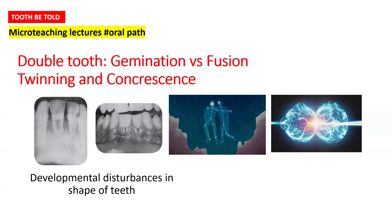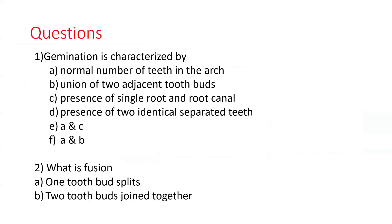Good evening to all of you. Today we are going to discuss another topic in developmental disturbances in the shape of the teeth, which is gemination, fusion, twinning, and concrescence. It's a micro-teaching lecture with high yield points for INICET, NEET, MDS, university exams, as well as INBDE.